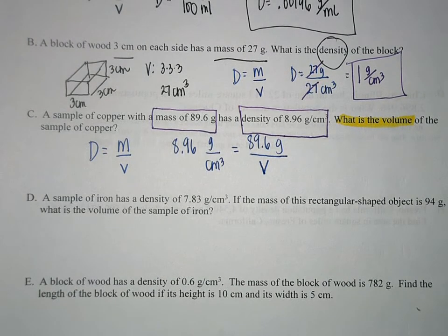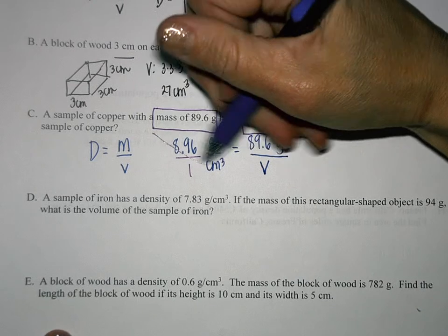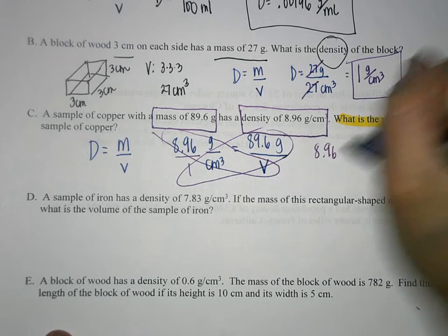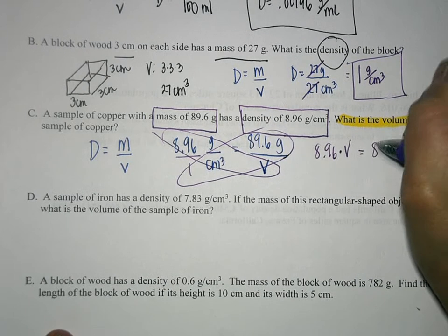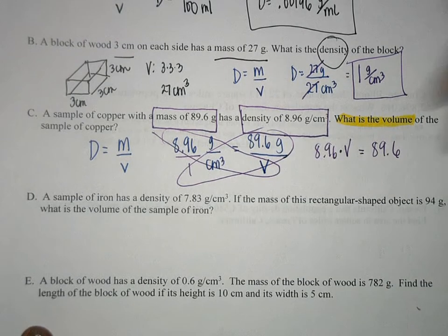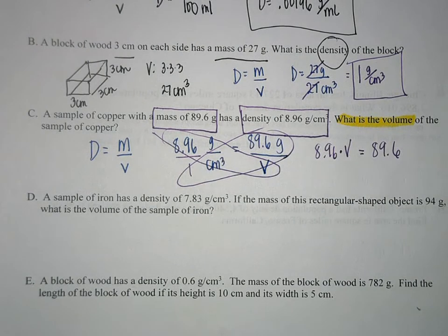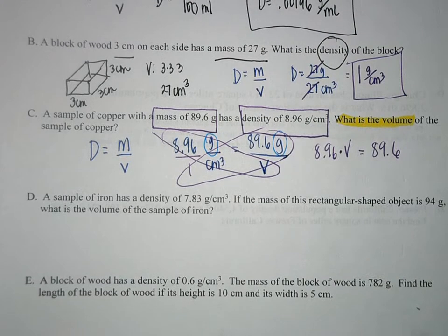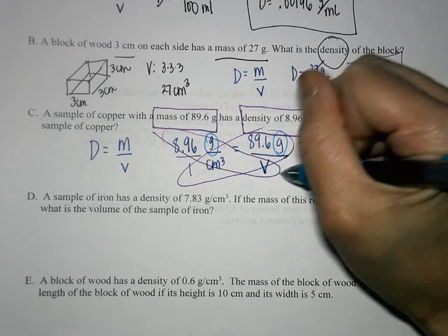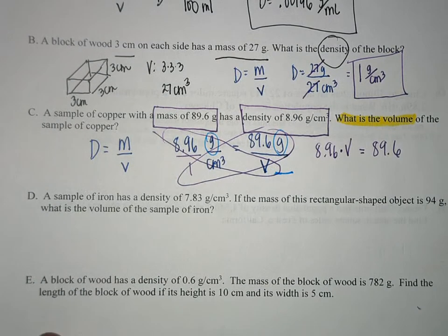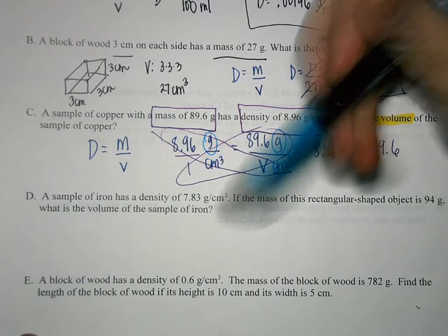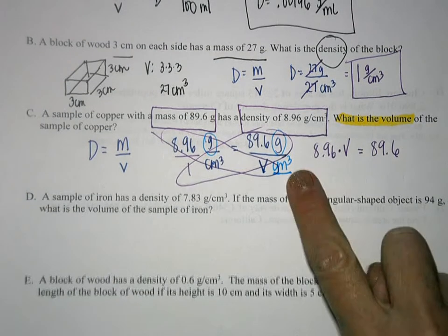Using density equals mass divided by volume, I plug in what I know: 8.96 g/cm³ = 89.6 grams divided by V. Just like with proportions, I cross-multiply, giving 8.96V = 89.6. Notice that grams match on both sides, so the volume will be in centimeters cubed. Dividing both sides by 8.96, I get 89.6 ÷ 8.96 = 10. So the volume is 10 centimeters cubed.